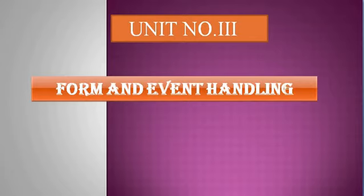An event is an activity that represents a change in the environment. For example, a mouse click or pressing a particular key on a keyboard represents an event. A JavaScript event is an action that can be detected by JavaScript. There are mainly four types of form events: on change event, on select event, on blur event, and on focus event.